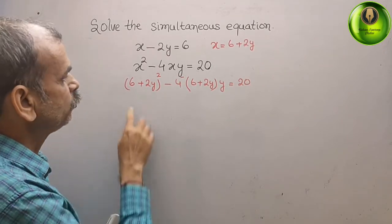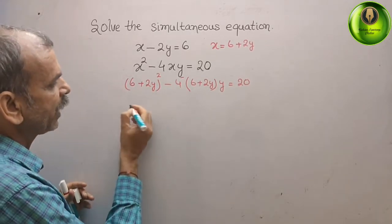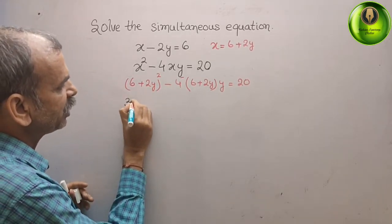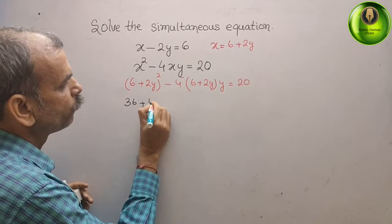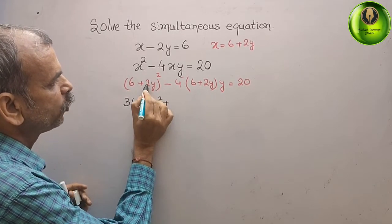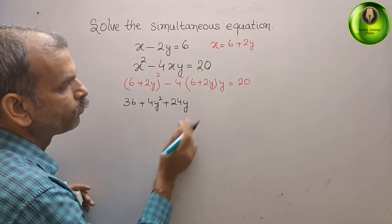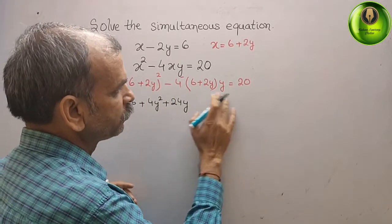Now solve this. What we will get? You can see here a plus b whole square. That is what we will write: 36 plus 4y squared plus 4 into 6 is 24, 24y.